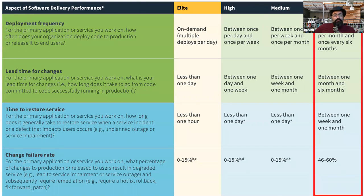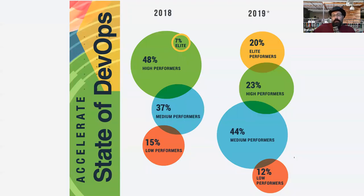Alex sees the metrics and compares their organization to others, discovering that their organization is pretty much in low performance when it comes to implementing DevOps. They release very rarely, their lead time for changes is pretty long, it takes ages to restore service, and a lot of their deployments go bad. They also discover that the majority of the industry is leaps and bounds ahead — and there is a group of elite performers that actually grew three times in just one year, from 7% to 20% between 2018 and 2019.